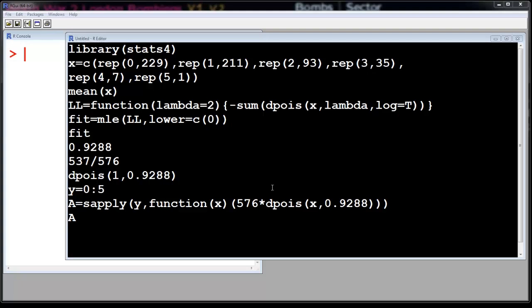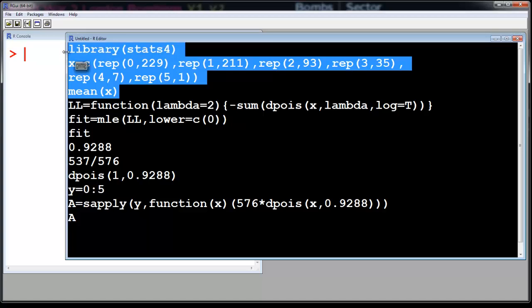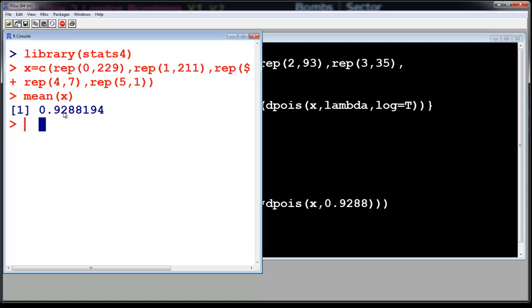First we just feed in the sample X and find the mean, so the mean comes to be 0.9288. We can stop here and start working from this lambda, but we are going to use a numerical estimation also.